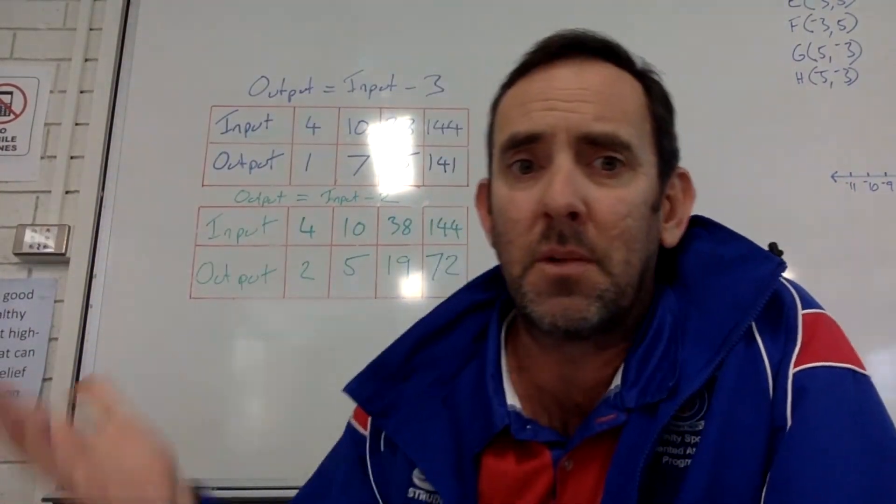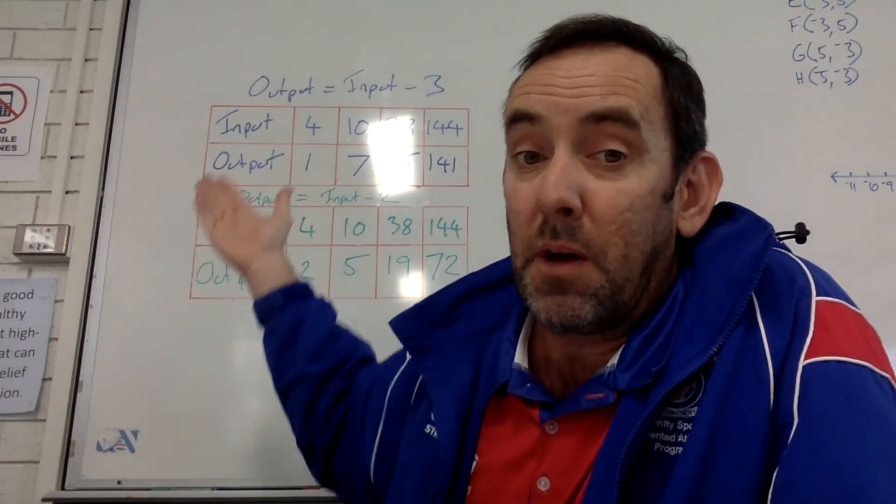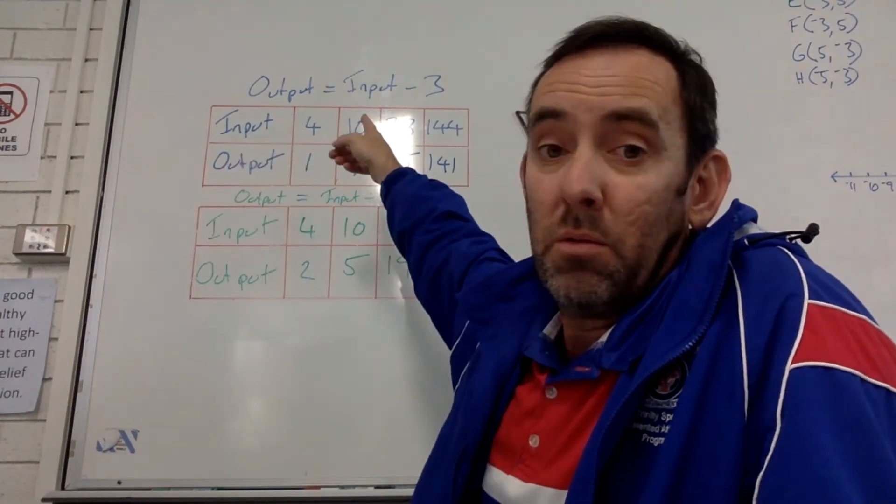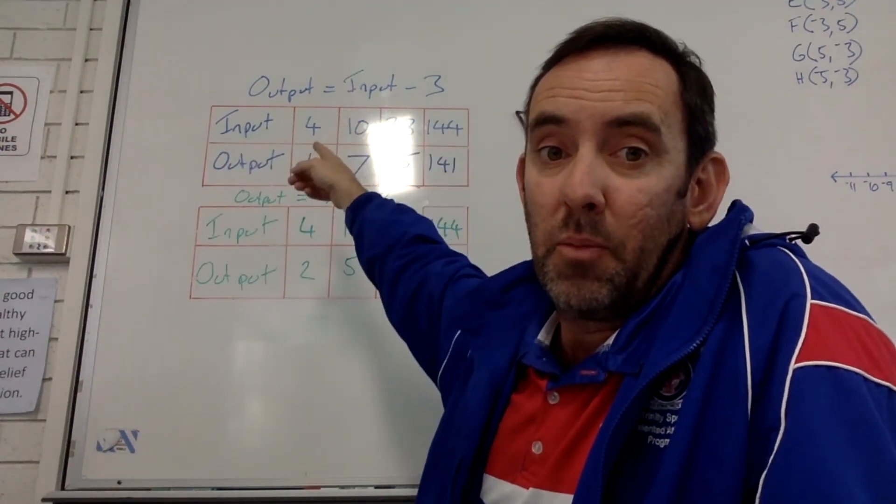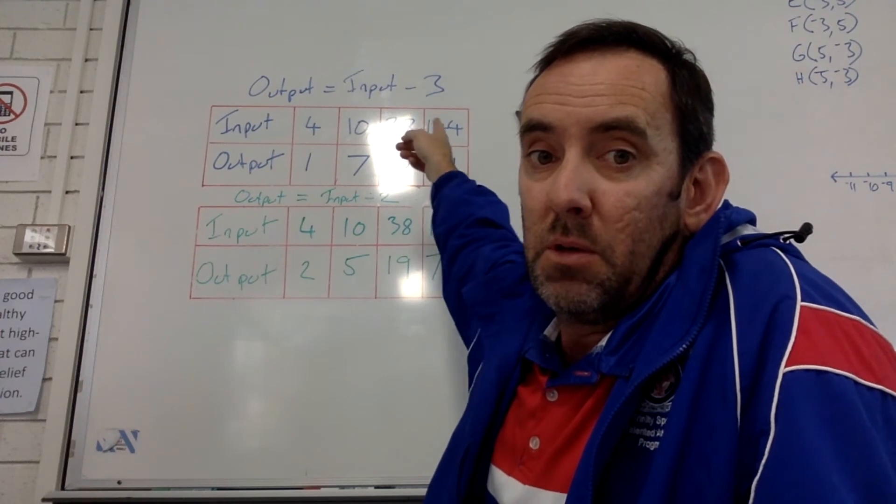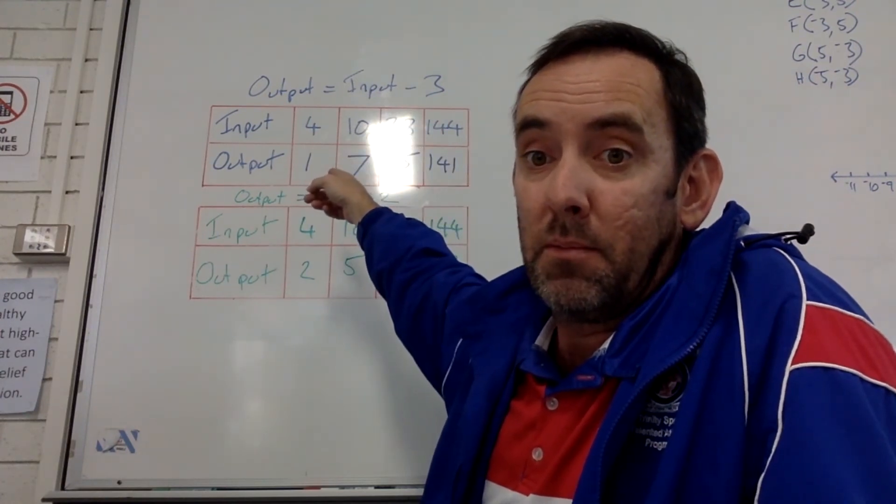So, in a nutshell, input and output tables, we have a rule. I put the input in to the rule, and I get an output, and that's it.